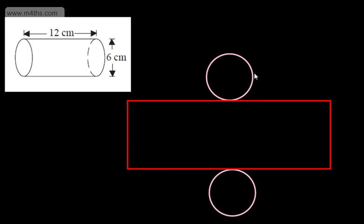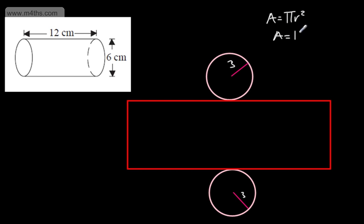We have a diameter of 6 on the circles, which means that we've got a radius of 3 centimetres. These are two identical circles. The area of a circle is given as pi r squared. So in each case we're going to have pi multiplied by 3 squared. 3 squared gives me 9, so this is going to be 9 pi centimetres squared. The area of the other circle is also 9 pi centimetres squared. When we say exact values, I haven't written it as a decimal.